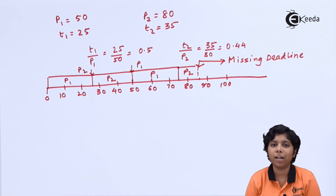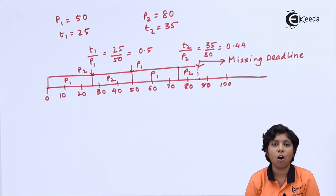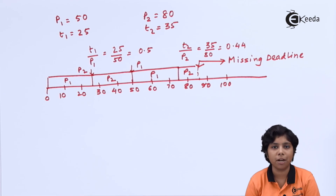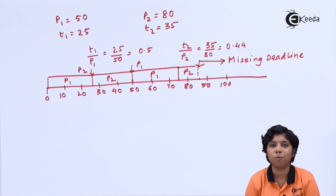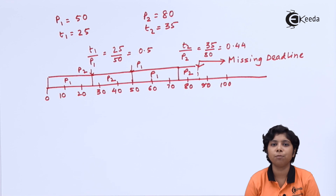That is the limitation of rate monotonic algorithm — it cannot always allocate all processes based on period priority. With one process, CPU utilization is 100%, but as the number of processes increases toward infinity, utilization reduces to approximately 69%. As shown in our examples with two processes — 75% and 94% — deadline misses can still occur. Rate monotonic scheduling should be used with its constraints in mind, but it remains optimal for real-time CPU scheduling.